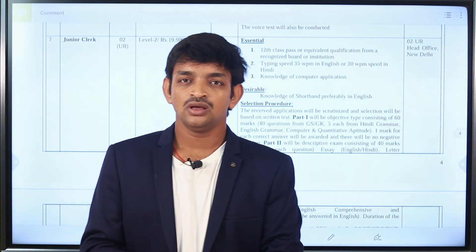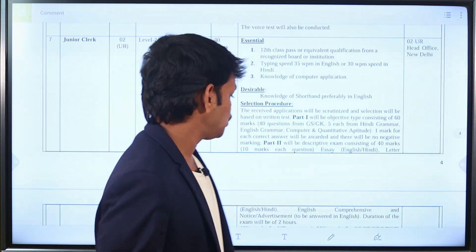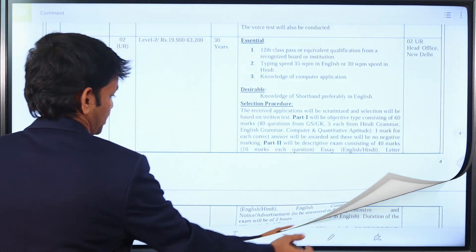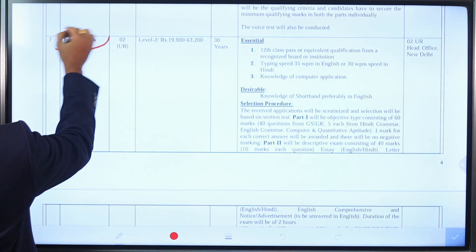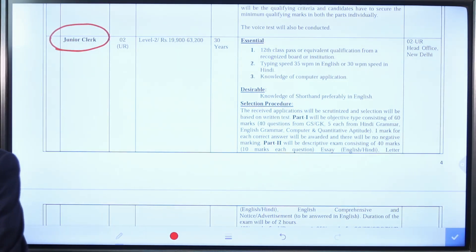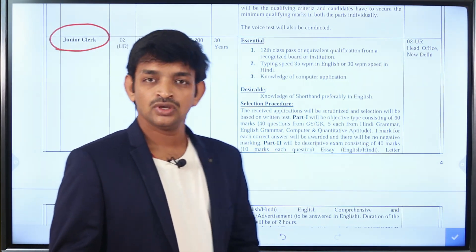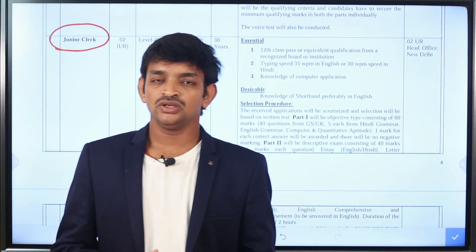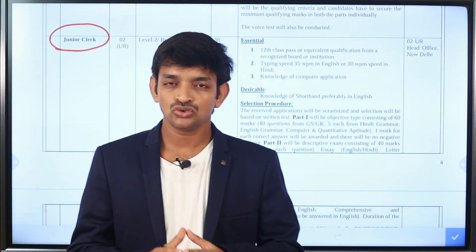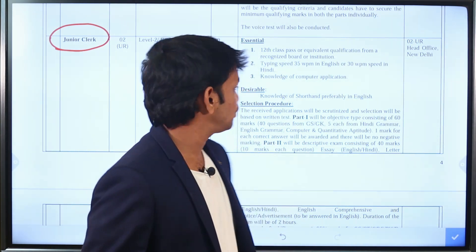Let's look at the first post: Junior Clerk. For the Junior Clerk post, there are two posts available, including the unreserved category.